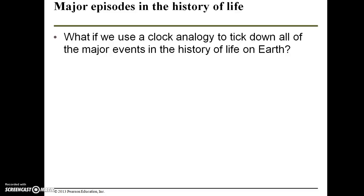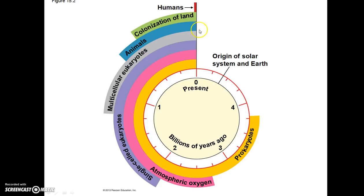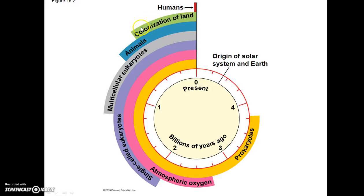If we were to use a clock analogy to tick down all the major events in the history of life on Earth, this is what it would look like. Our own bar representing humans is basically equivalent to the blink of an eye. Here we have zero representing present day, and then billions of years ago: the origin of the solar system and the Earth at about 4.6 billion years ago, prokaryotes arising, atmospheric oxygen arising, single-celled eukaryotes arising, and then multicellular eukaryotes. It wasn't until less than a billion years ago that animals actually evolved, and more recent still that animals were able to colonize land.